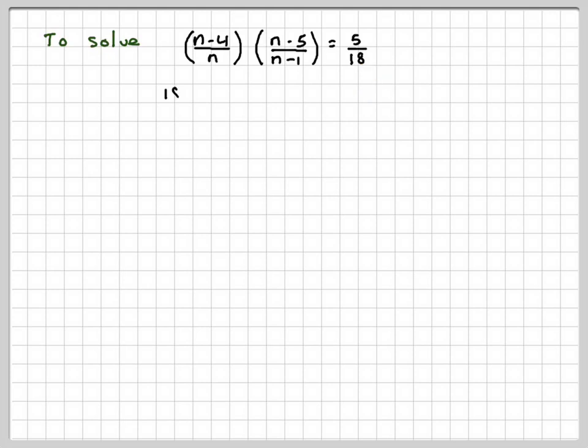So we'll need to solve n minus 4 over n times n minus 5 over n minus 1 is equal to 5/18. Cross-multiplying, we're going to get 18 times n minus 4 times n minus 5 is equal to 5 times n times n minus 1. To solve this, it's going to become a quadratic, so we need to expand the bracket. So we'll do n times n minus 5 minus 4 times n minus 5.